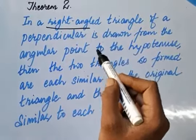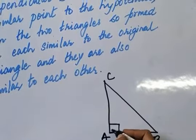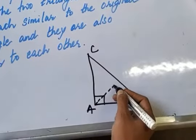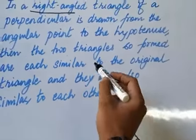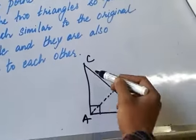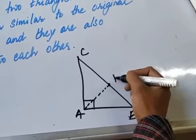So that right angle is our angular point. You can see this is our angular point. From here we are drawing a perpendicular to the hypotenuse. So this is our hypotenuse we know. And we have drawn this. Let's mark this point as D.